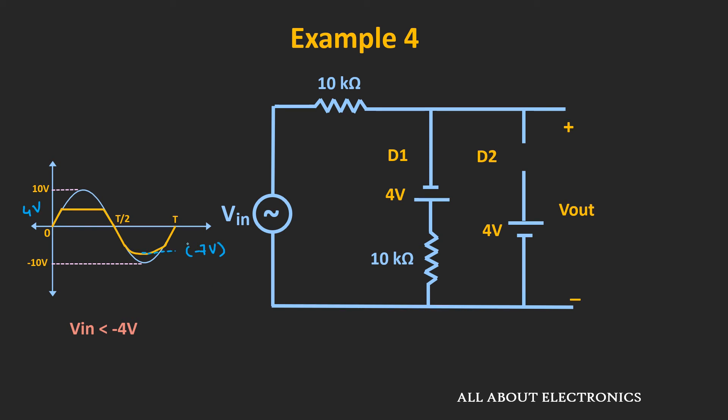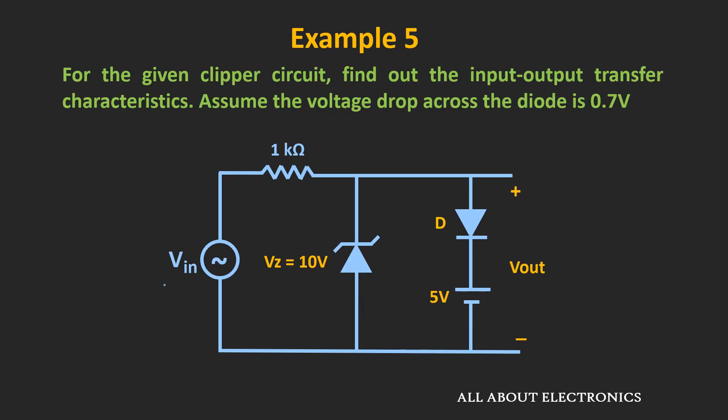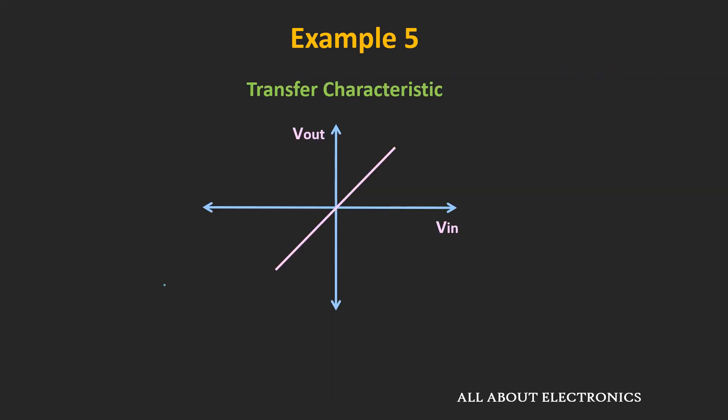Now let's move to the next example. In this example, we have been given this clipper circuit and we have been asked to find the input-output transfer characteristic of the given circuit. For those who don't know what the transfer characteristic is — basically, it defines the relationship between the input and the output; that means how the output changes with the input voltage.